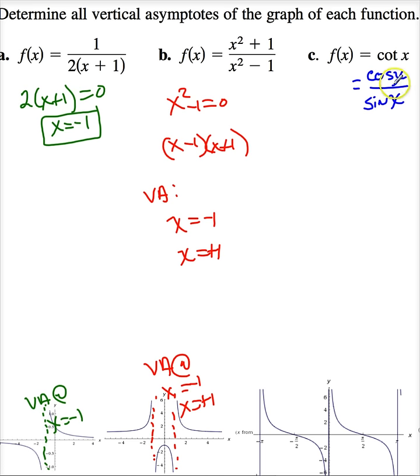Now, sine and cosine are never 0 at the same point. So, whenever sine of x is 0, cosine of x will not be. As a matter of fact, it will be 1. So, where is sine of x 0? Well, sine of x is 0 whenever x is equal to n pi.